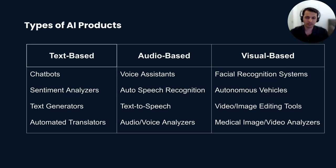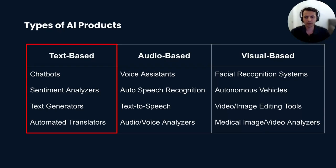This categorization of text, audio, and visual is also helpful when you are focusing on the type of data that the AI model needs to be trained on or deal with. Text-based AI products primarily interact with textual data, using technologies such as natural language processing to understand, generate, and extract meaning from human language.